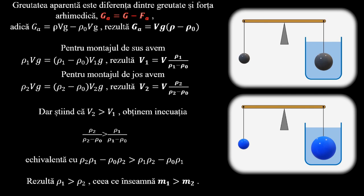Iar pentru montajul de jos avem condiția de echilibru ρ2·V·g = (ρ2 - ρ0)·V2·g, din care rezultă că V2 = V·ρ2/(ρ2 - ρ0).